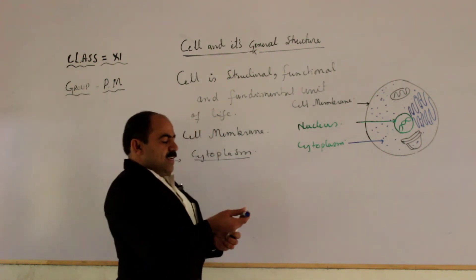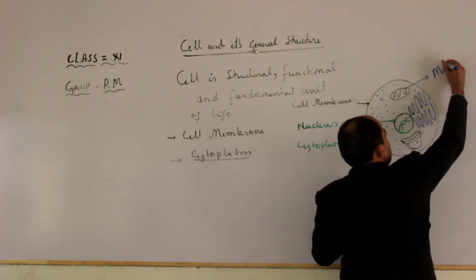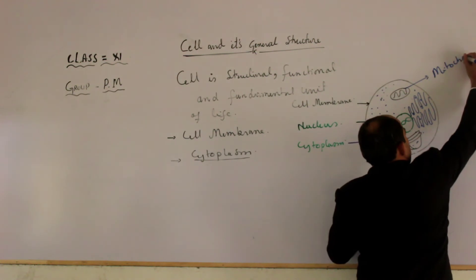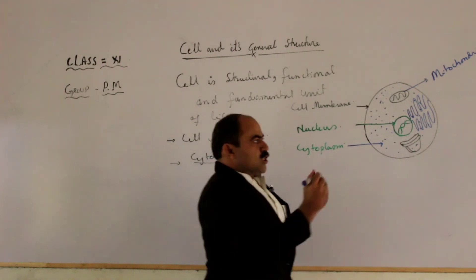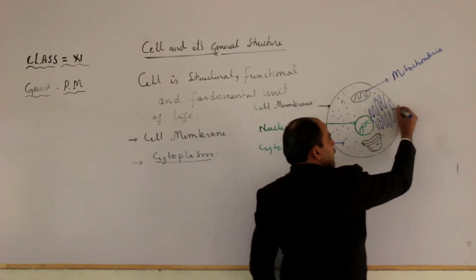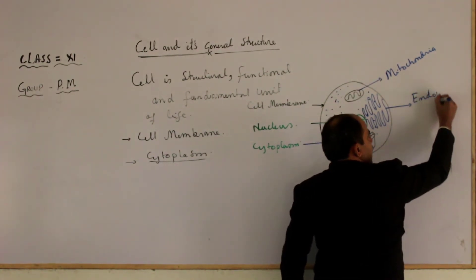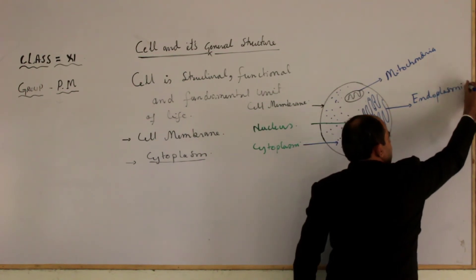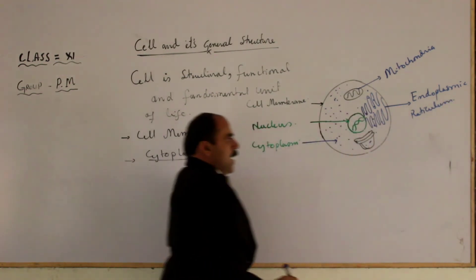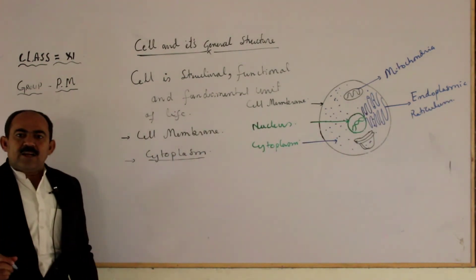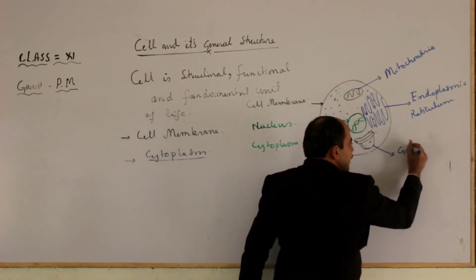As we can see in the diagram, we have mitochondria. We also have another structure present between the nuclear membrane and the cell membrane, known as the endoplasmic reticulum. We also have another structure — a double membrane-bounded organelle known as the Golgi bodies.